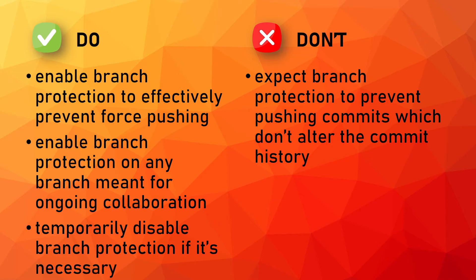Something you don't want to do is expecting branch protection to prevent pushing commits which don't alter the commit history. If you want to disable pushing any change directly to the branch, you should use the setting 'require pull request reviews before merging.' Note that collaborators with write access pushing commits on top of a protected branch, either directly or by merging a PR without any merge conflict, will be unaffected by this setting, because merging a PR is essentially like pushing the commits directly.